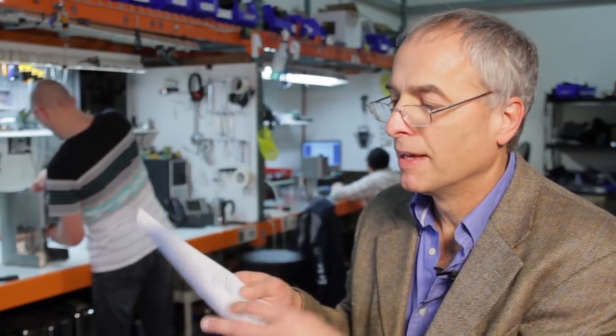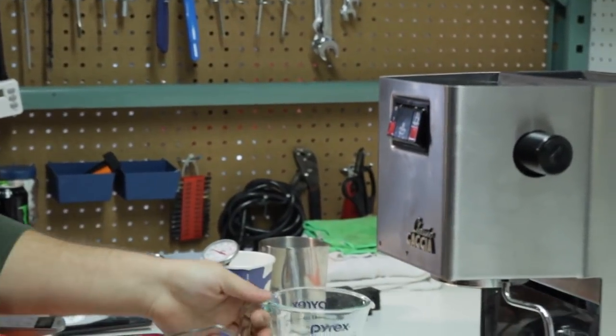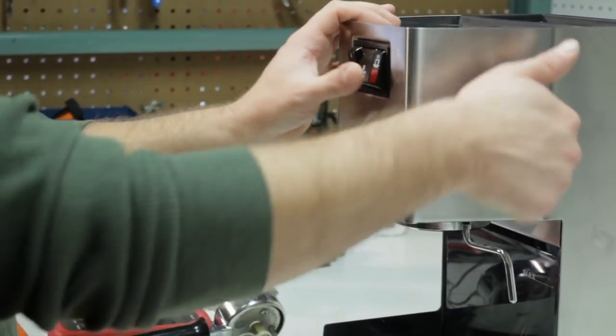What I have here is a checklist for the Gaggia Classic. We have this for all the machines. In the process we go through, we set the machine up onto the bench. When we first turn it on, we start a timer to time how long it takes to heat up. That's our first test.